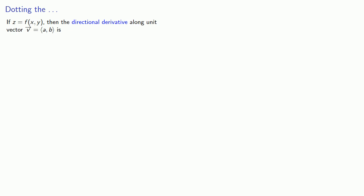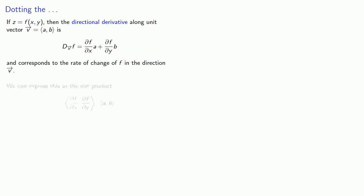If z is a function of two variables, then the directional derivative along a unit vector (a, b) corresponds to the rate of change of our function in the direction of v. We can express this conveniently as the dot product of the vector whose components are the partial derivatives with respect to x and y, and the vector corresponding to our unit vector.